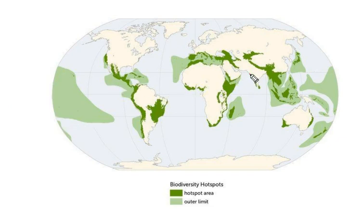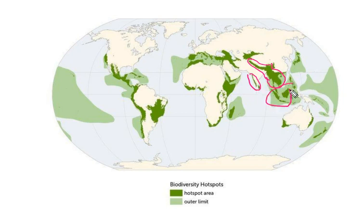In India, you can see the Western Ghats, Sri Lanka, and the Himalayas. Almost the entire southeast Asia, Indonesia, Philippines, some parts of Japan, and in Australia the western and eastern parts are biodiversity hotspots.